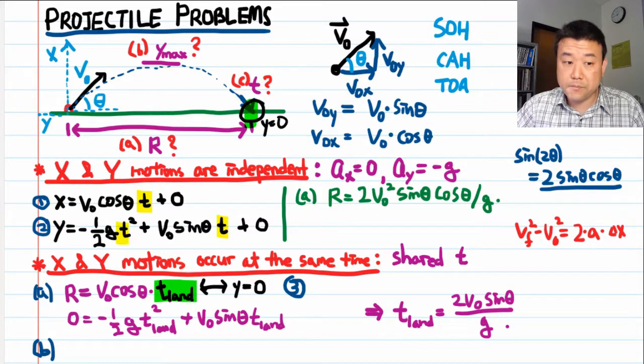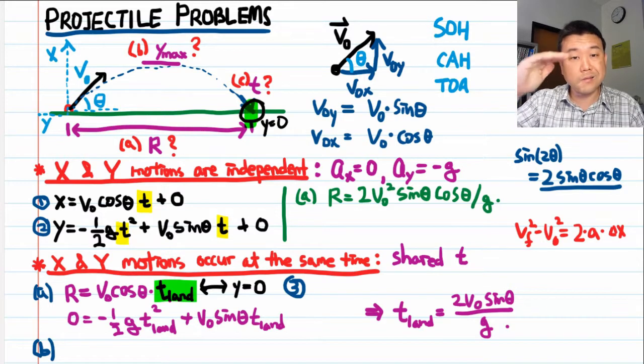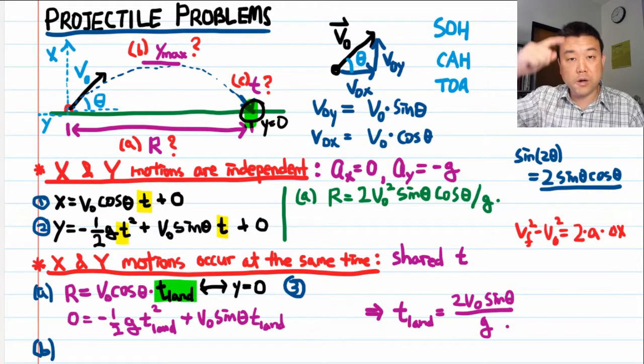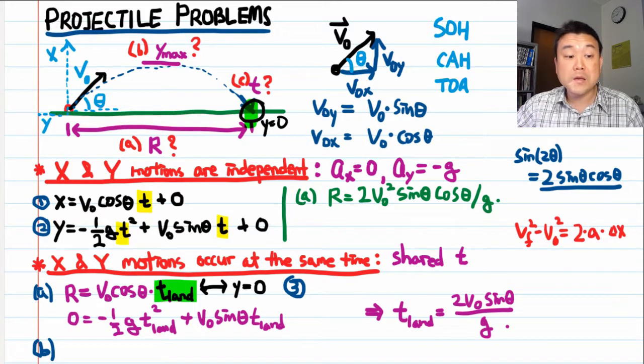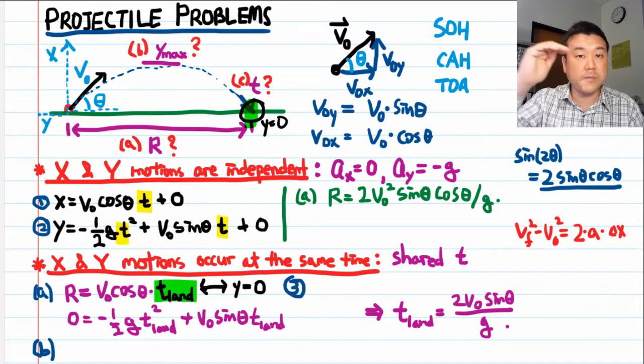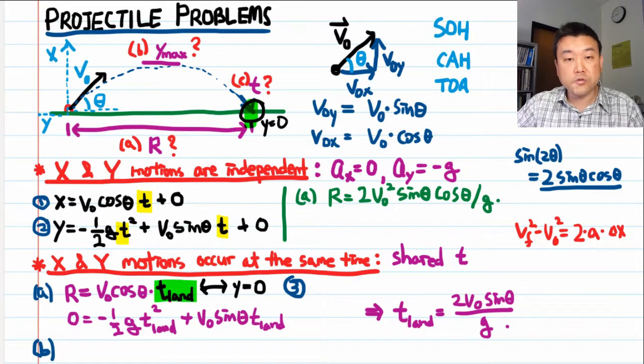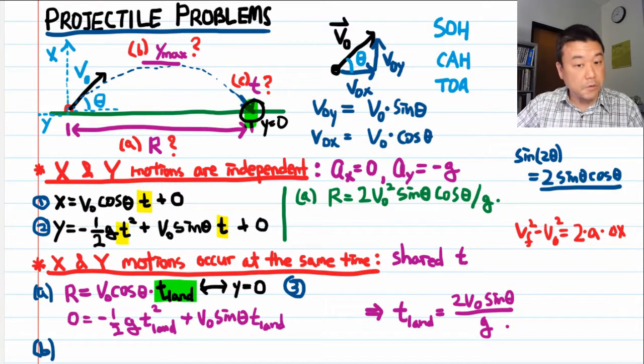So for part B, what's important is remembering that x and y motions are independent. Here, for the maximum height, the only thing that matters is the y component of motion. The horizontal component doesn't matter at all. So I'm going to ignore the horizontal component altogether for determining the maximum height. And treat this like a one-dimensional kinematics problem involving the y component.